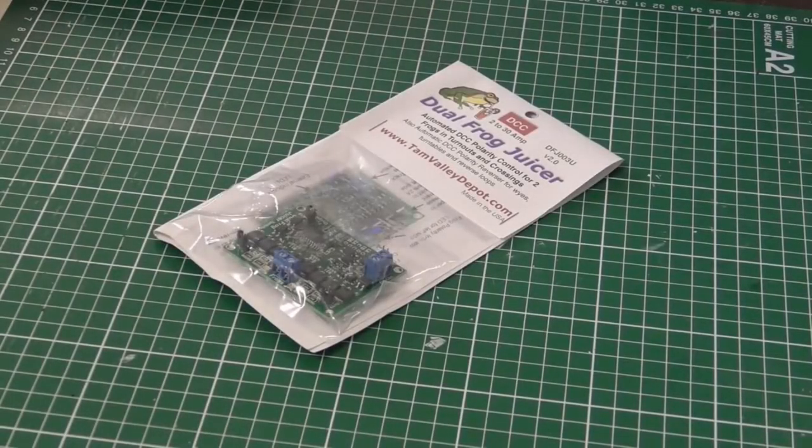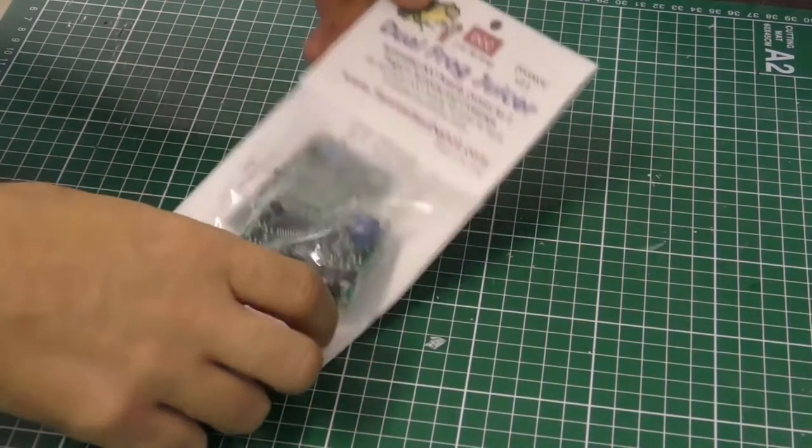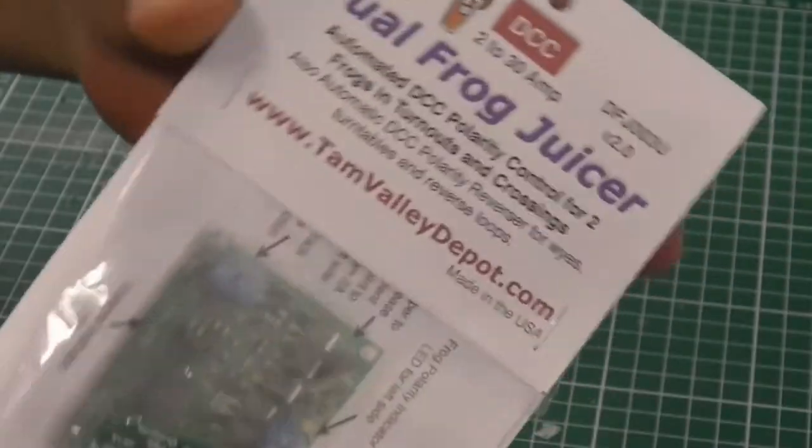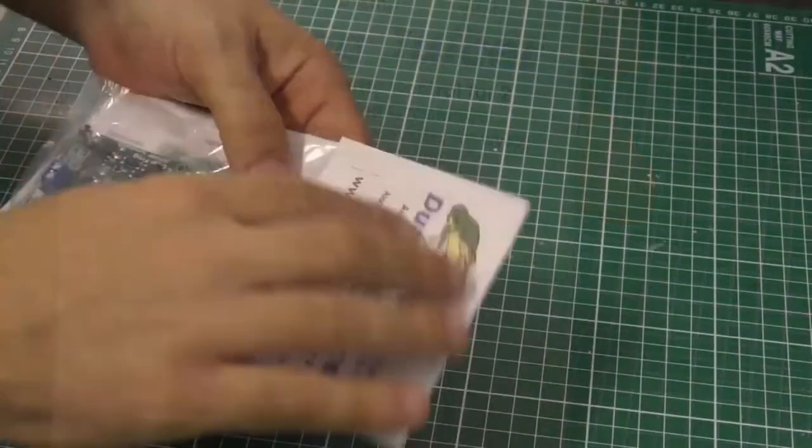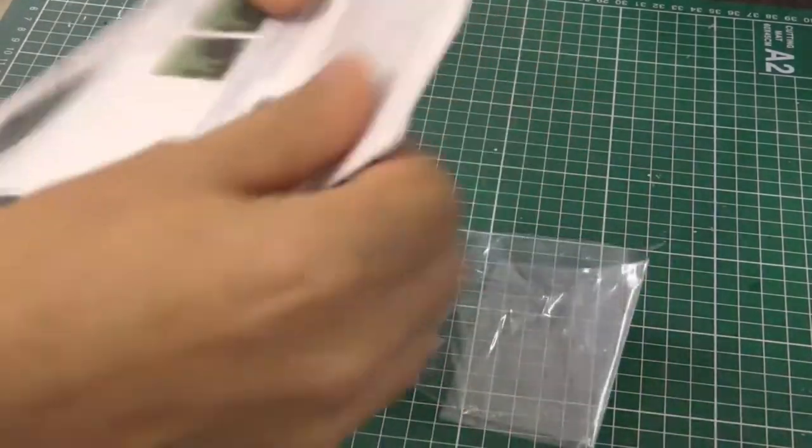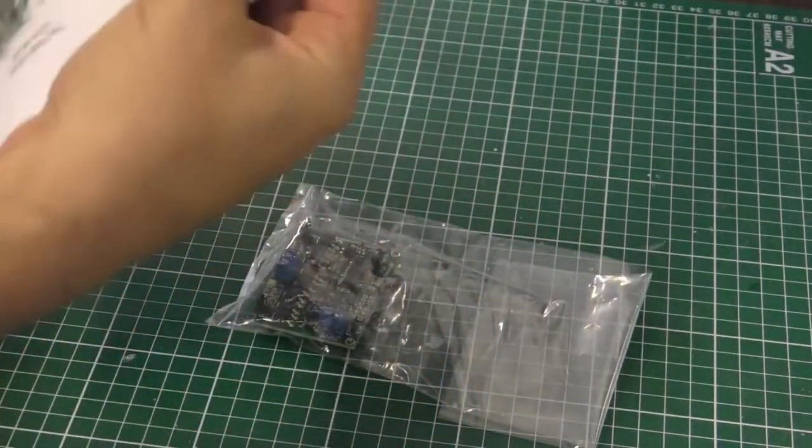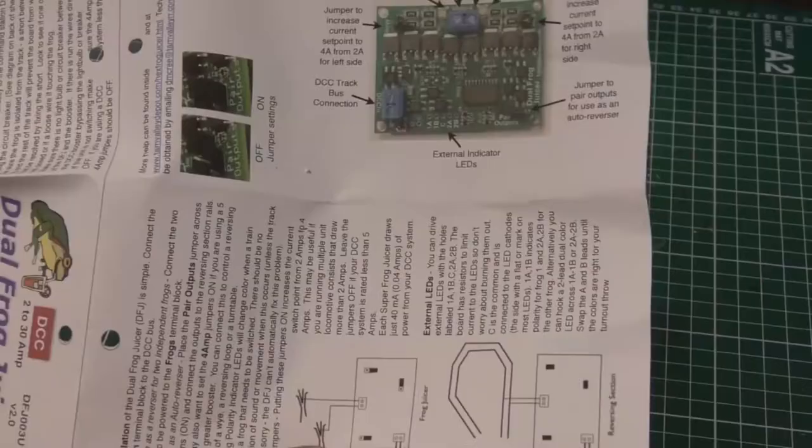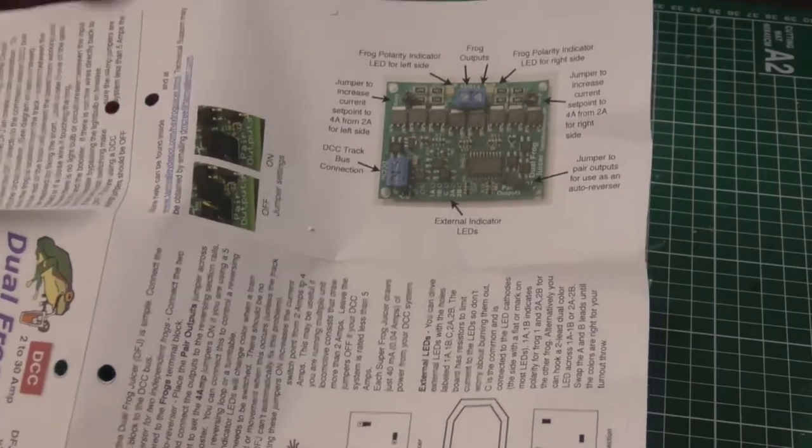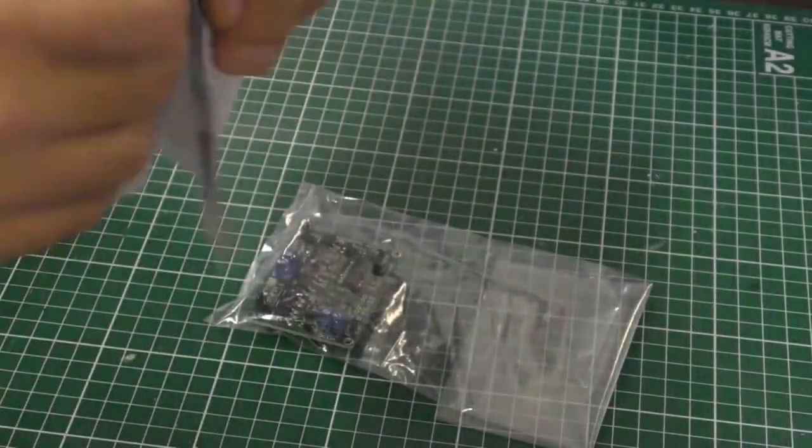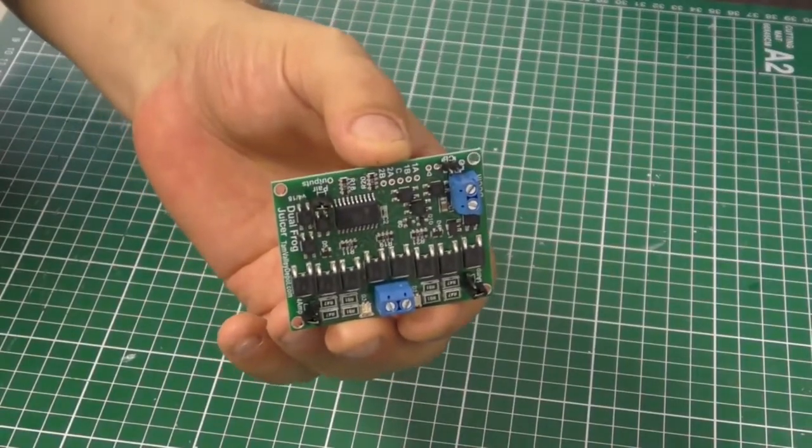Here we are over at the workbench and I've got my dual frog juicer that we're going to be installing today. It's from Tam Valley Depot so how about we open this up. In the package it comes with instructions showing details. These things can be used to change polarity of points, reverse loops, that type of stuff.